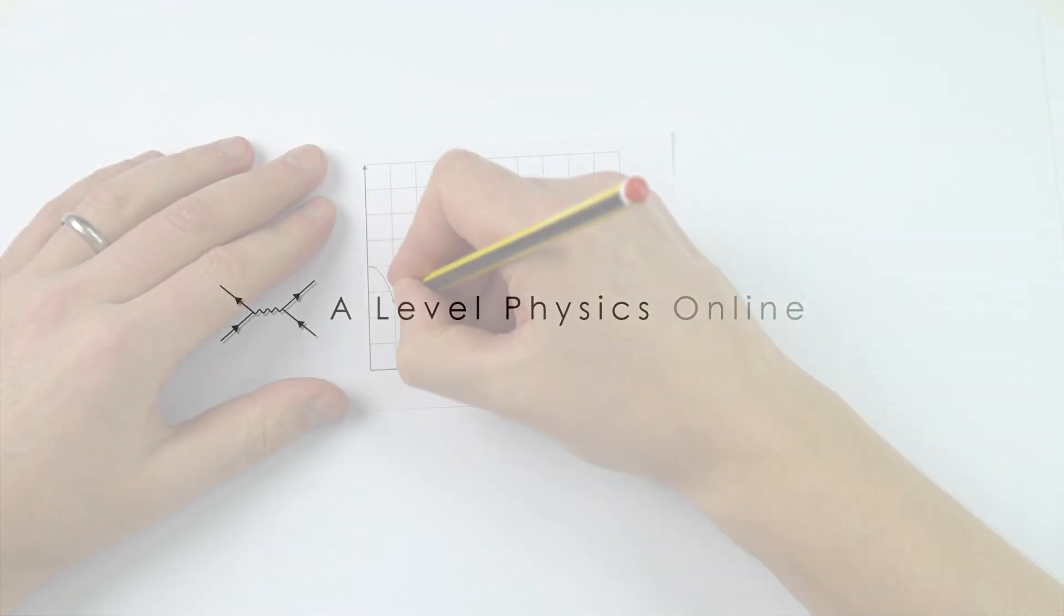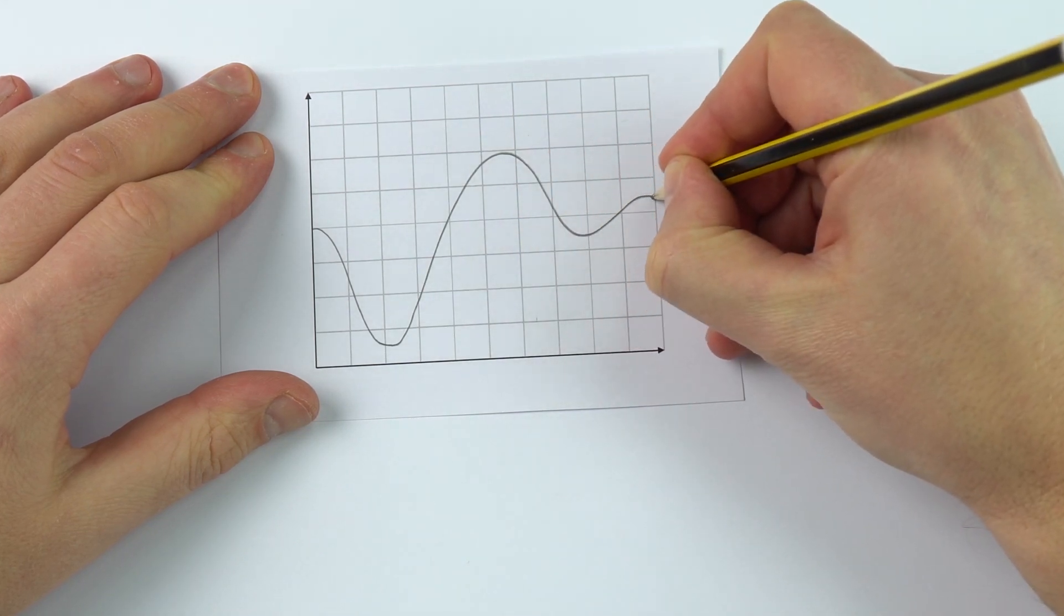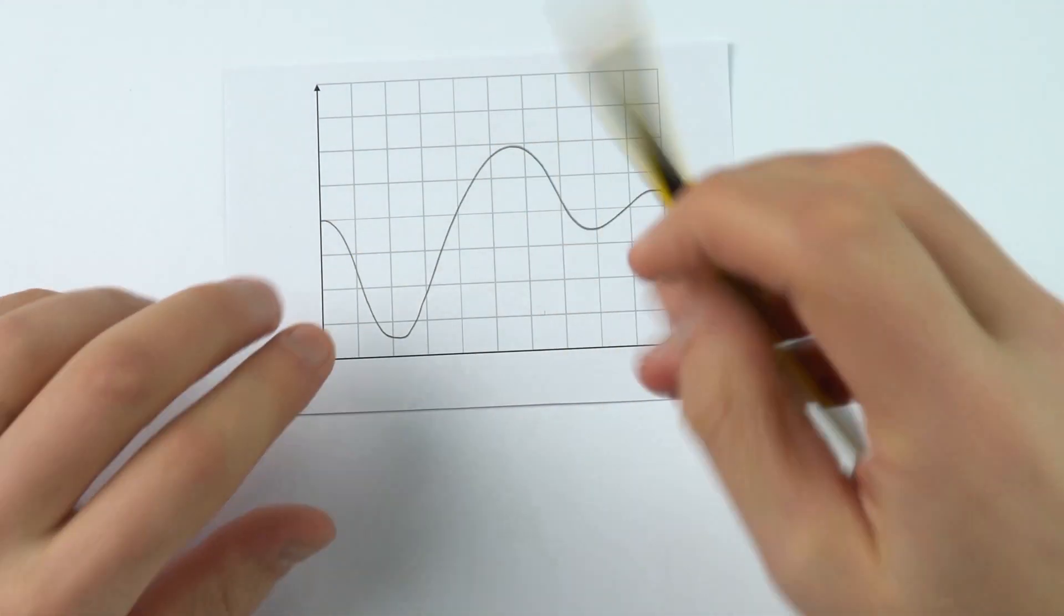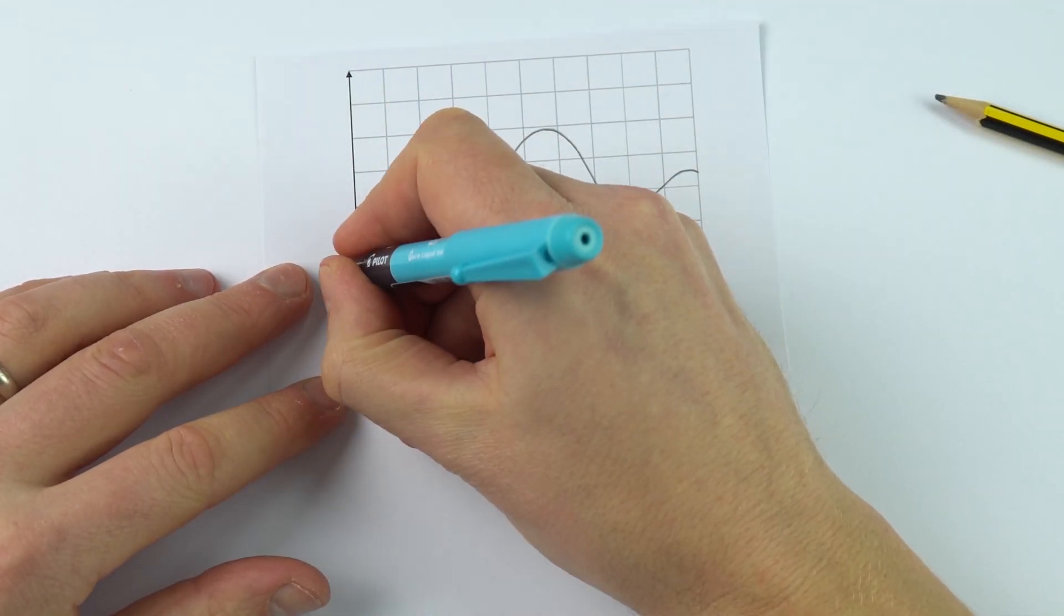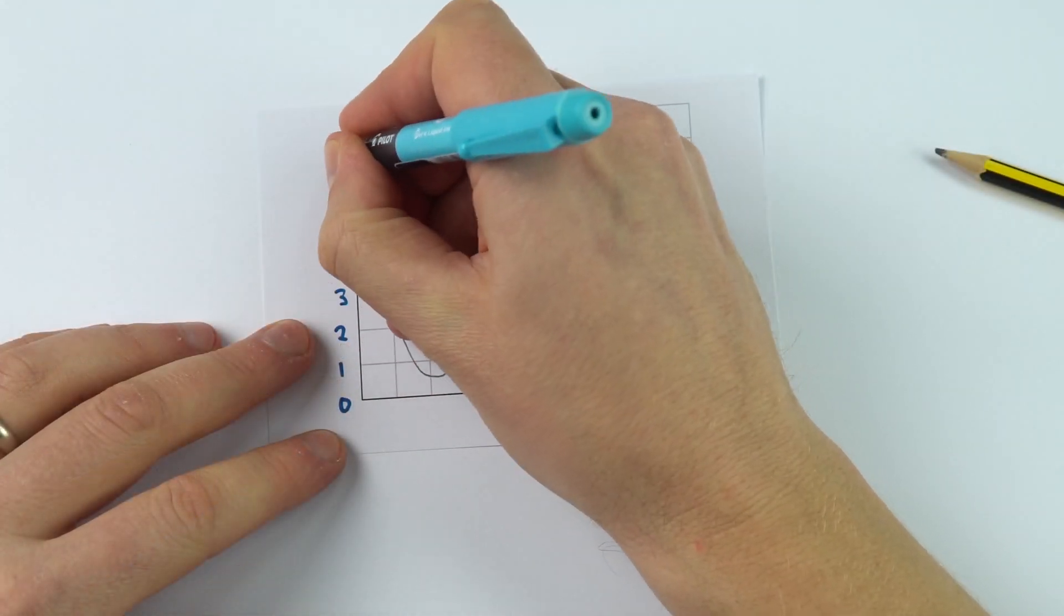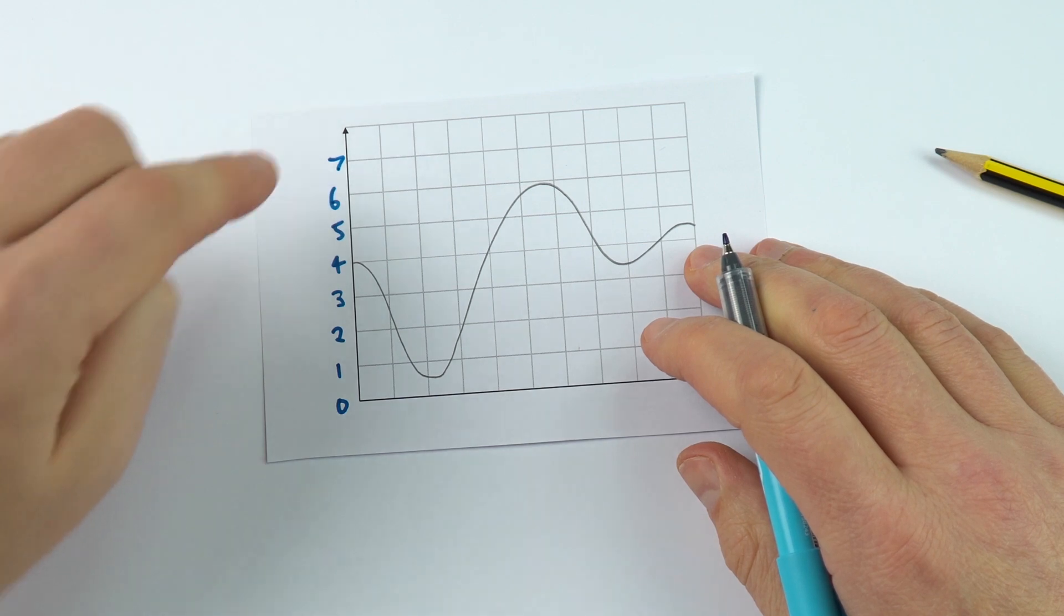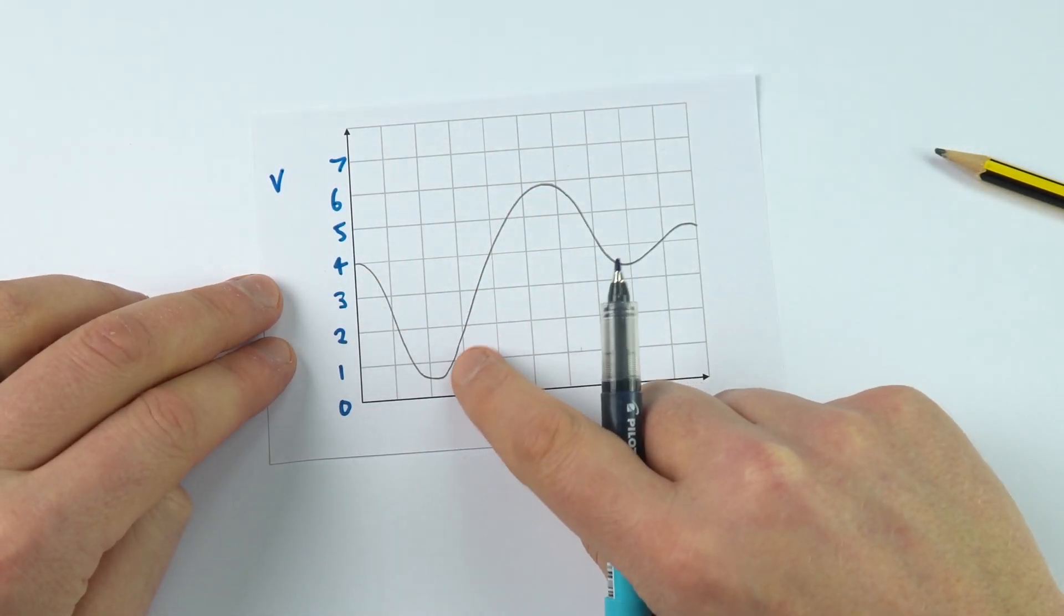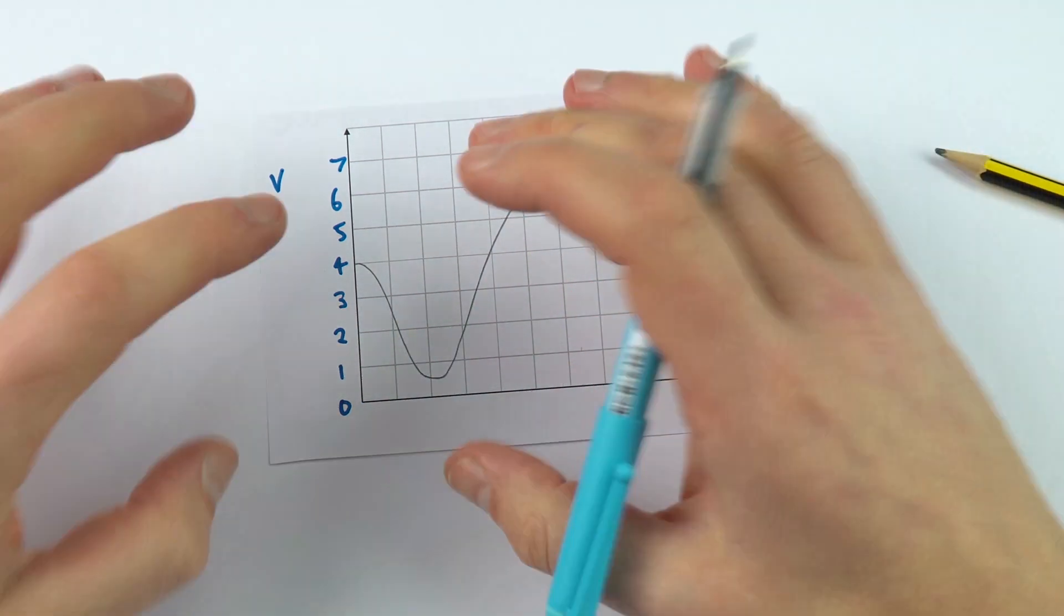So on this piece of graph paper I'm going to draw a signal that looks a bit like that. Now this one over here can have any value. Let's say we're going to go from 0, 1, 2, all the way up to 7. We go up to maybe 7 volts. Perhaps this is a sound wave which has been recorded using a microphone and we've got it stored in an electronic format.